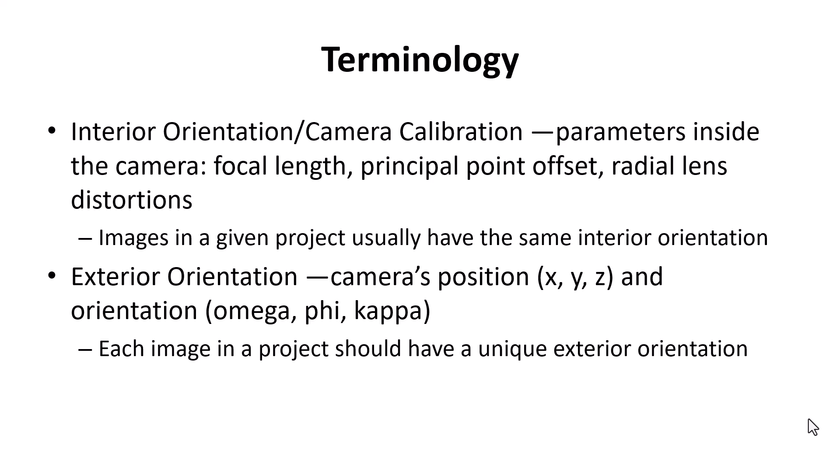In terms of exterior orientation, it is the camera's position in 3D space — its coordinates — and the orientation of that lens with respect to a coordinate system. Each image in a project should have a unique exterior orientation. We shouldn't have any images having exactly the same exterior orientation.